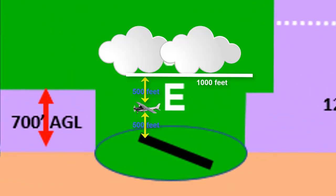There is a bit of difference where Class E touches the surface, and this is also true for Class B, C, and D airspace.